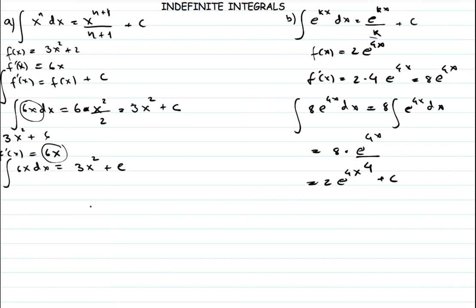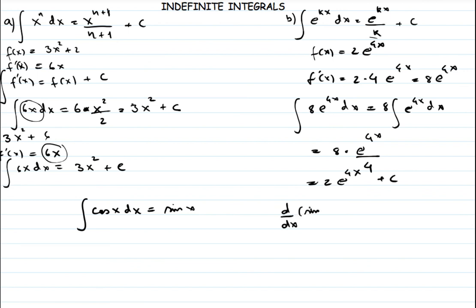We also have the situation of trigonometric functions. For example, the integral of cos(x) dx — what is it equal to? We ask ourselves: what function do we differentiate in order to get cos(x)? What we differentiate to get cos(x) is sin(x), because d/dx of sin(x) equals cos(x). So this is our third rule: the integral of cos(x) dx equals sin(x) plus c.